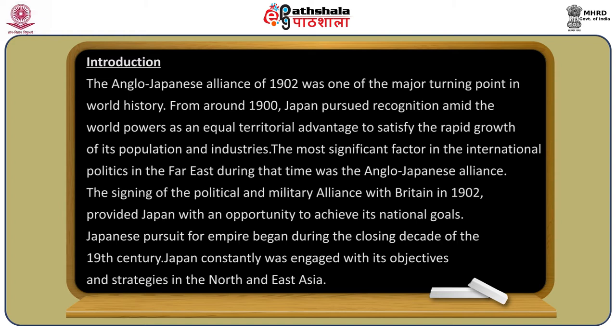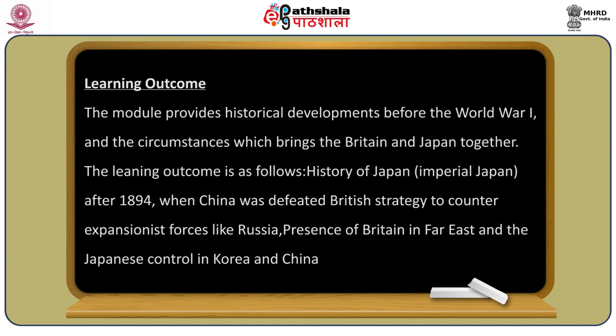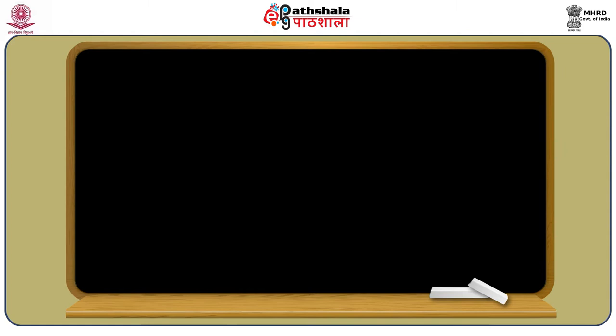The learning outcomes of this module include the historical developments before World War One and the circumstances that brought Britain and Japan together. These include: the history of Imperial Japan after 1894 when China was defeated; British strategy to counter expansionist forces like Russia; the presence of Britain in the Far East; and Japanese control in Korea and China.